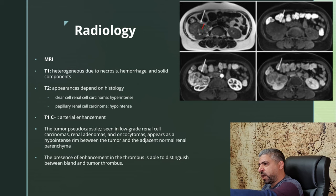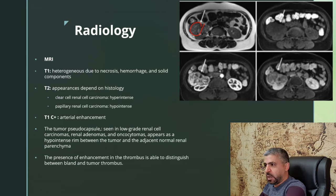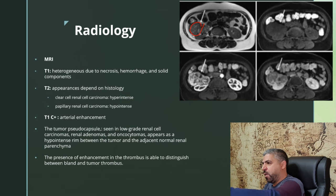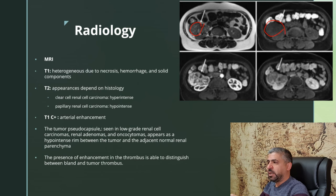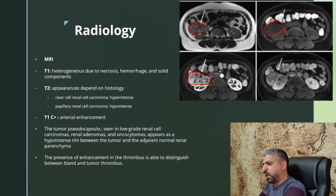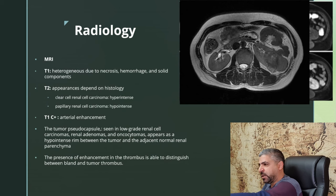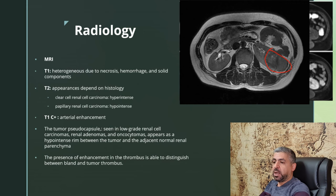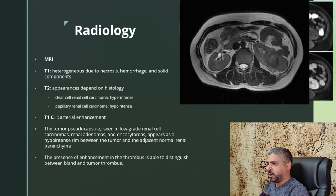In this example, the T2-weighted image shows a hypointense renal mass, making it more likely to be papillary carcinoma than clear cell renal cell carcinoma. On the T1 fat-saturated image it is iso-intense to the kidney, while on post-contrast imaging the arterial phase shows heterogeneous enhancement with some washout at later phase. In another example, the T2-hypointense tumor confirms likely papillary renal cell carcinoma rather than clear cell.